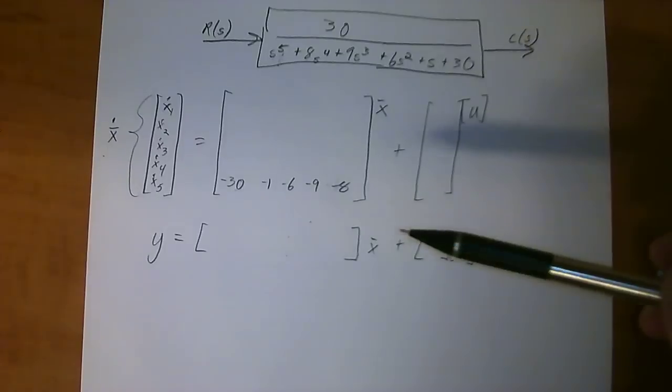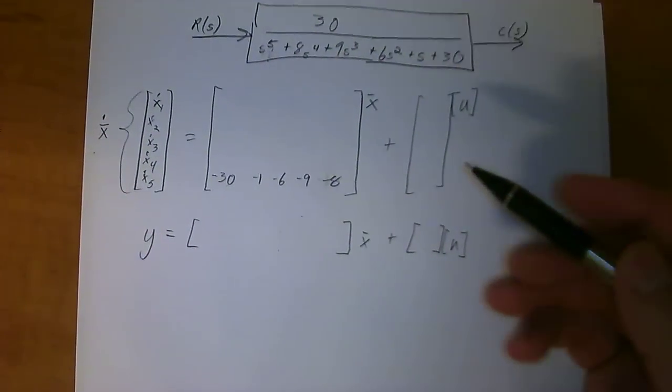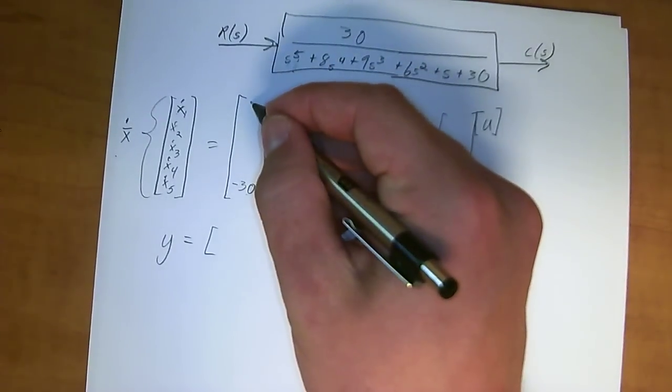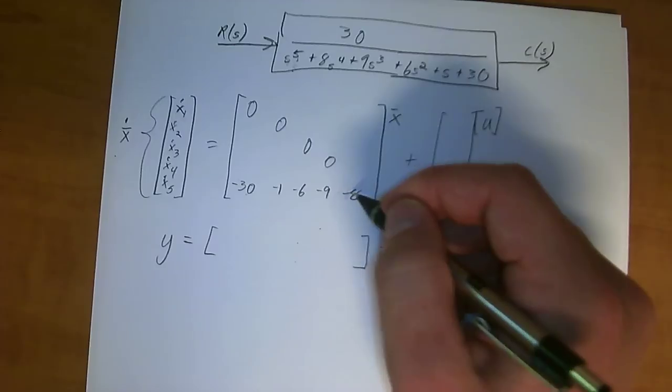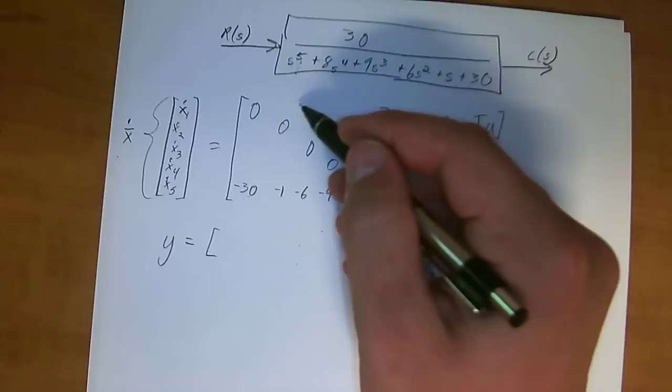You've got negative 30, negative 1, negative 6, negative 9, negative 8. I'm just going to put the diagonal in here real quick, just like that.